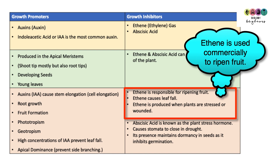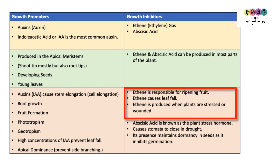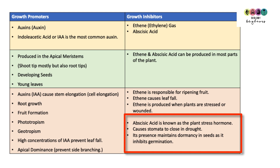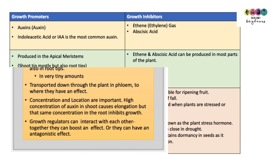Ethene also causes the leaves to fall from trees and is produced when plants are stressed or wounded. Abscisic acid is known as the plant stress hormone because it causes the stomata to close in times of drought. It also maintains dormancy in seeds, inhibiting germination.